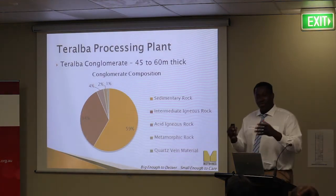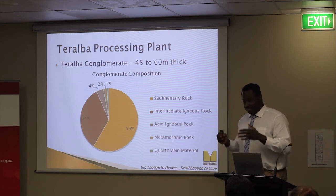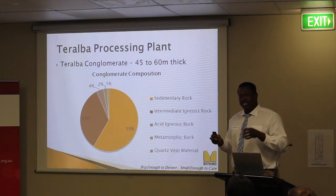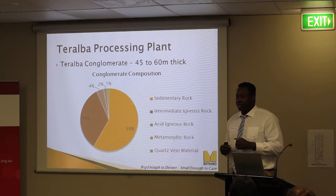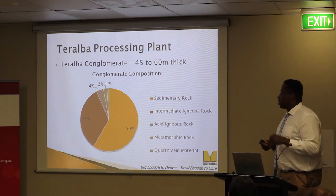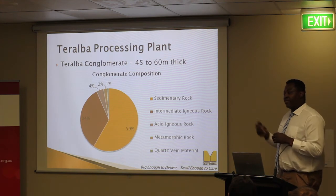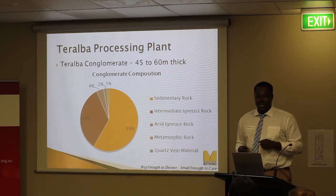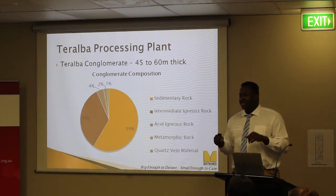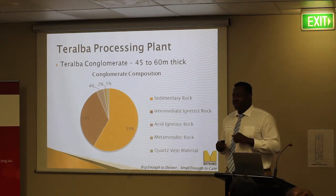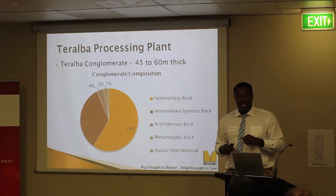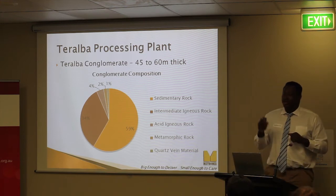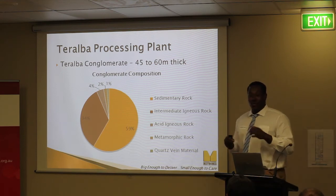The raw feed we're getting from the ground is what we call conglomerate — a mixture of different types of rock which have consolidated over time. The conglomerate we extract is called the Terralba conglomerate, approximately 45 to 60 metres thick, sitting on top of the Great Northern Seam, which is part of the Sydney Basin. It is comprised of approximately 59% sedimentary rock, 34% intermediate igneous rock, 4% acid igneous rock, 2% metamorphic rock, and 1% quartz band material.